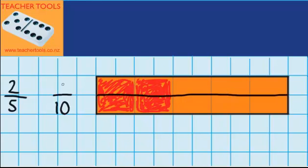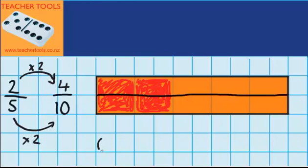It's easy to see that I've now got four tenths. That makes sense from what we learned earlier because the denominator has been made two times bigger and the numerator has been made two times bigger. I'm really good at changing tenths into decimals, so I know that four tenths is the same as 0.4, which means that two fifths is the same as 0.4.